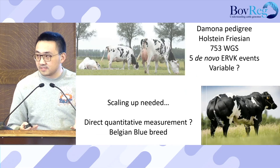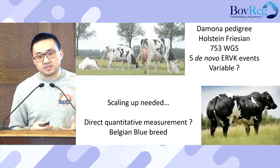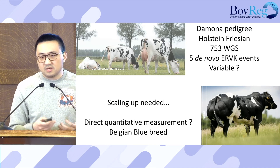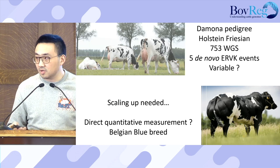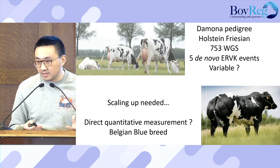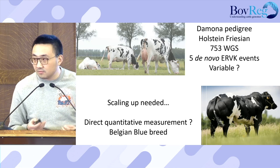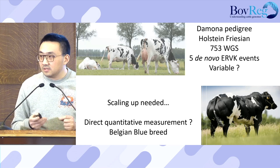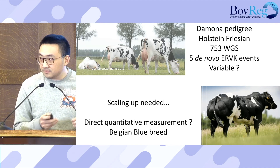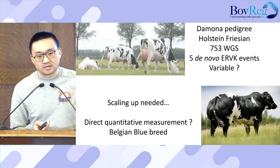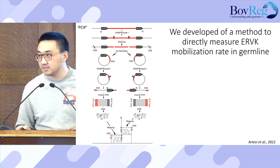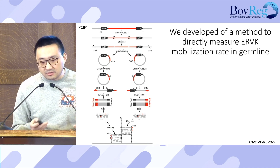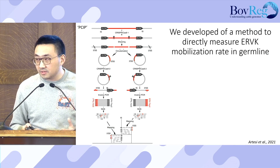This observation encouraged us to test whether the de novo mobilization rate of ERV truly differs between individuals. We needed to scale up to a method that can directly estimate ERVK mobilization rate individually. We moved from dairy cattle to Belgian Blue beef cattle, and to that end developed a capture-based method that can directly measure ERVK mobilization rate in the germline.